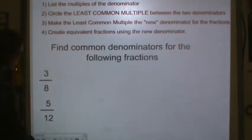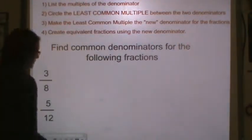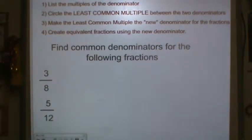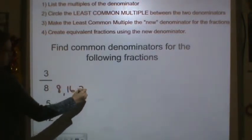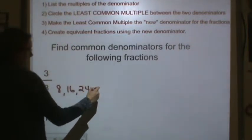Let's try another one. 3 eighths and 5 twelfths. So again the first step is to list the multiples. So we're going to do that 8, 16, 24, 32.